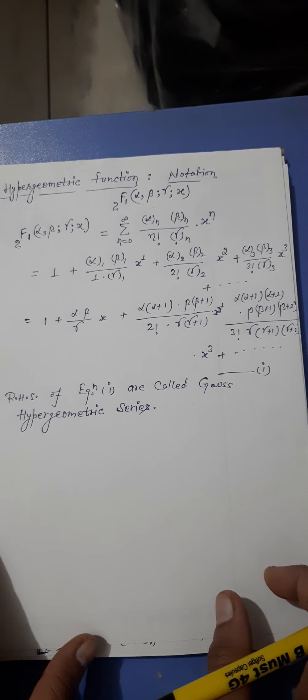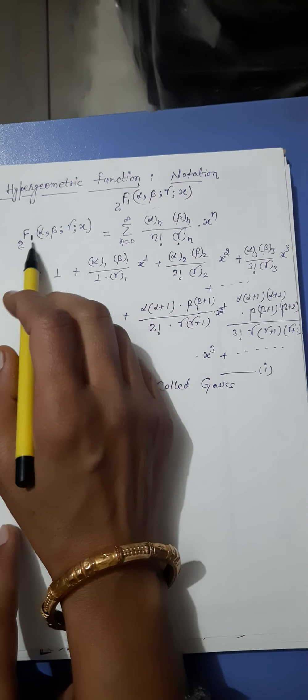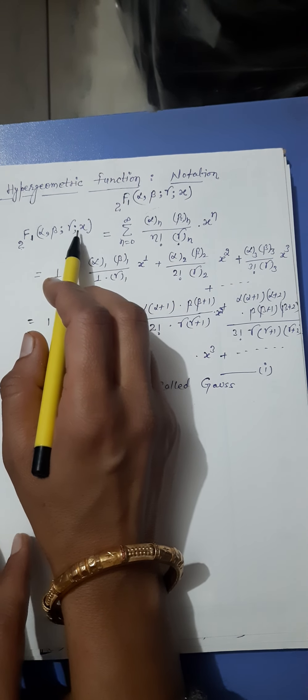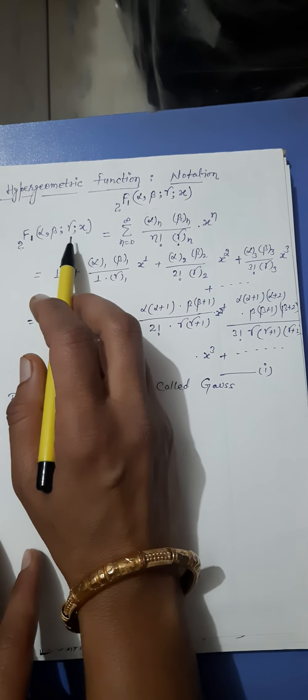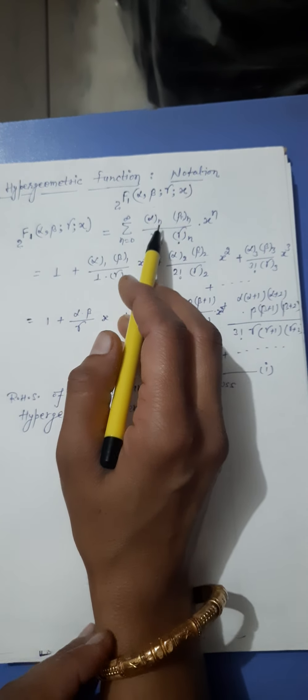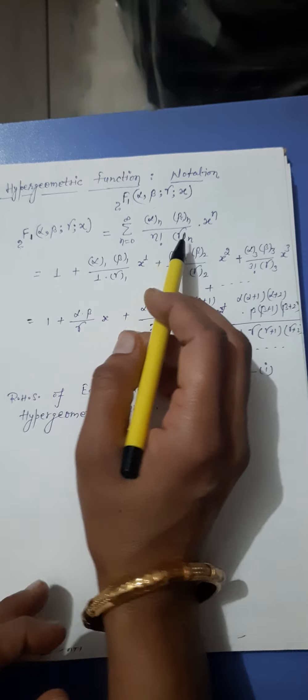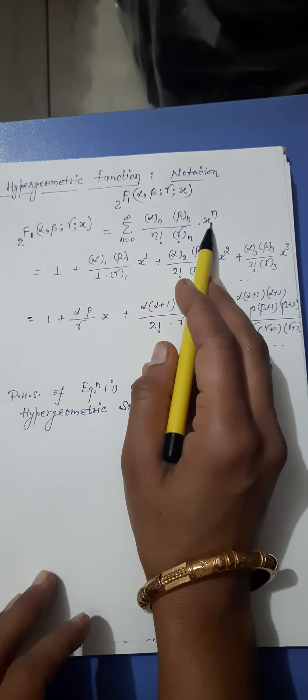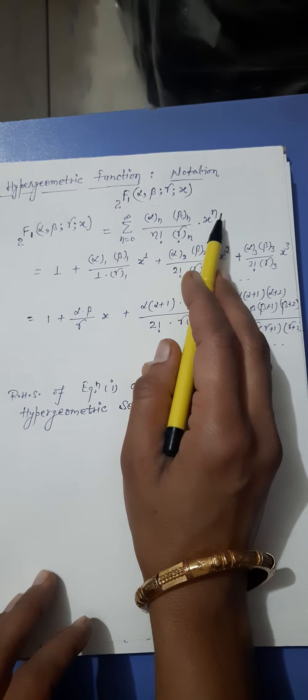Good morning students. We will start with the hypergeometric function. The hypergeometric notation is denoted by 2F1(α, β; γ; x) and it is defined by the summation from n=0 to infinity of (α)_n (β)_n / (n! (γ)_n) times x raised to the power n.